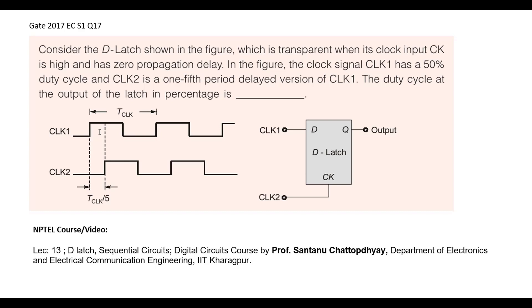This question given in GATE 2017 session 1 EC paper. The question is: consider the D latch shown in the figure which is transparent when its clock input CK is high and has zero propagation delay. In the figure, the clock signal CLK1 has a 50% duty cycle and the clock 2 is a delayed version of clock 1 by T clock by 5. And we need to find out the duty cycle at the output.